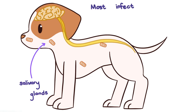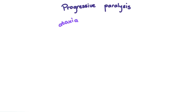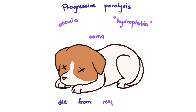The saliva is most infectious during the time clinical signs show. However, most dogs and cats can shed the virus 4 to 5 days before showing clinical signs — so that window of 4 to 5 days plus the clinical signs period until death is when infection can occur. This is the basis for the 10-day monitoring of suspected rabies cases, and in some places 14 days just to be safe. Eventually, paralysis slowly creeps up; the animal becomes ataxic, pharyngeal muscles paralyze making them unable to drink water, then they may fall into a coma and die from respiratory arrest.